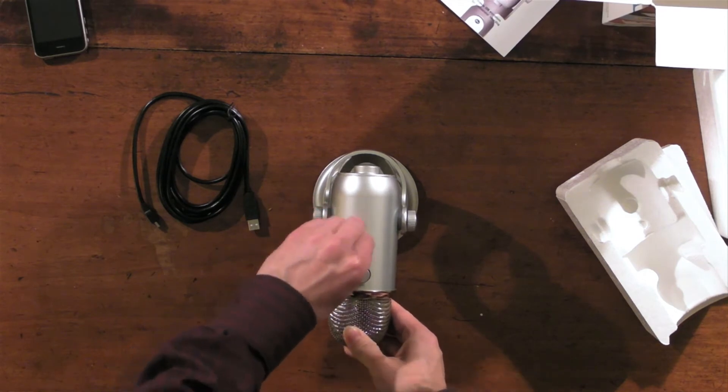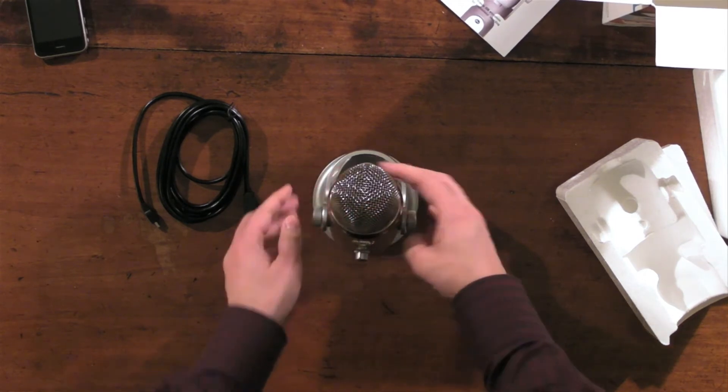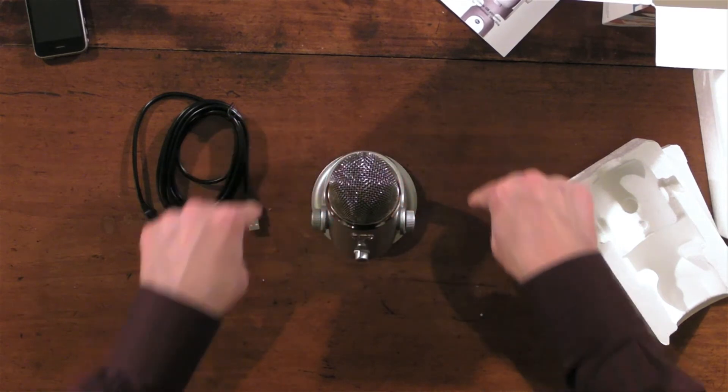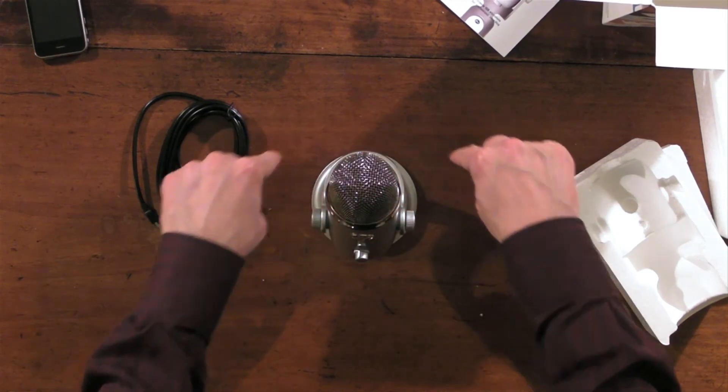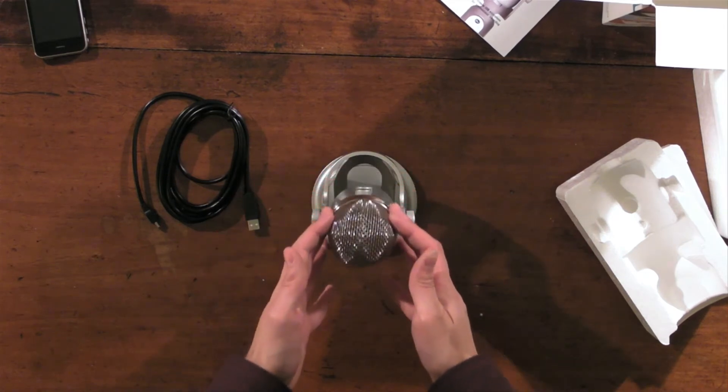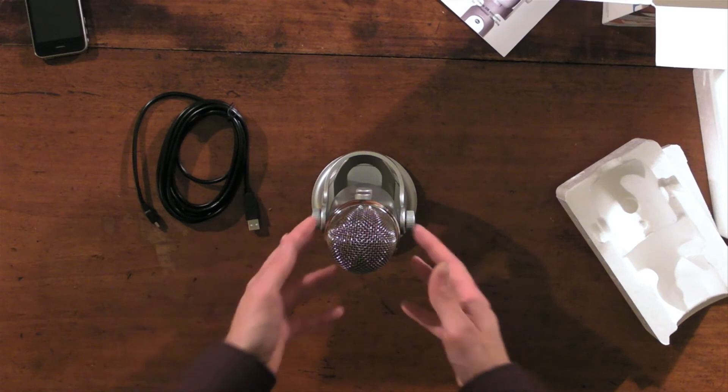Next one is a cardioid pickup pattern, which basically means heart-shaped. And that, again, comes out in a lobe like this. So, it's got a little bit of pickup to the back and then it comes out around the front. So, mainly in front and you'll get a proximity boost with that as well, which will make your voice sound all rich and low.